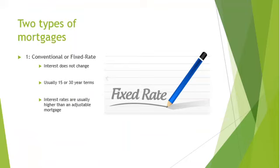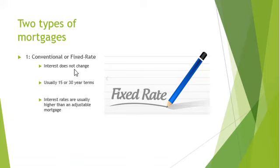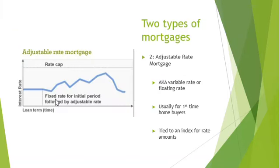There are two different types of mortgages at a basic level: your traditional fixed rate and your adjustable rate mortgage, or ARM. The fixed rate usually has 15 to 30 year terms. These interest rates are usually higher than the adjustable rate mortgage, just because they stay fixed — the interest rate doesn't change. The other type is the adjustable rate mortgage, also known as the floating or variable rate mortgage.